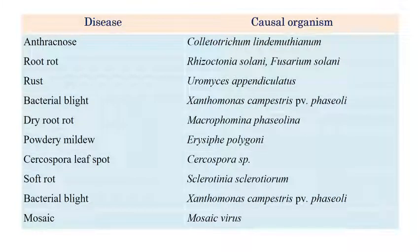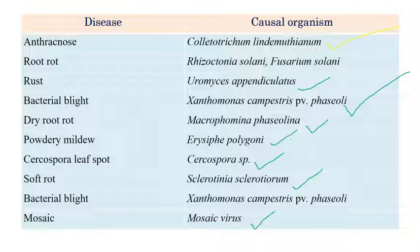The list of important diseases in beans: the first one is anthracnose, caused by Colletotrichum lindemuthianum. The second is root rot, caused by Rhizoctonia solani — in some cases Fusarium solani is also associated. Then rust, caused by Uromyces appendiculatus; bacterial blight caused by Xanthomonas campestris pv. phaseoli; dry root rot caused by Macrophomina phaseolina; powdery mildew, Erysiphe polygoni; Cercospora leaf spot caused by Cercospora species; soft rot, Sclerotinia; and mosaic caused by bean mosaic virus.